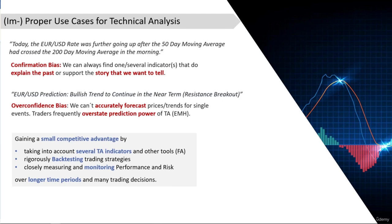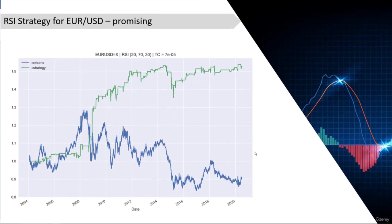The key point is gaining a small competitive advantage over longer time periods and many trading decisions. Even with the best strategies, we probably can't forecast markets with 80–90% precision. It's more realistic to assume we can get a small advantage — making predictions with 51%, 52%, or even 55% precision. For a single event, that's almost 50-50. But over longer time periods with many trading decisions, we create a meaningful competitive advantage.